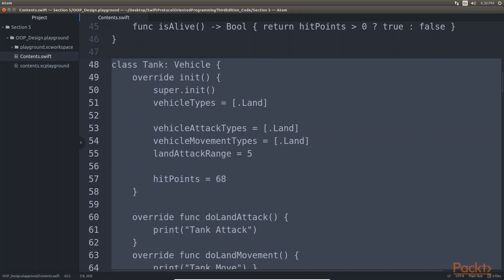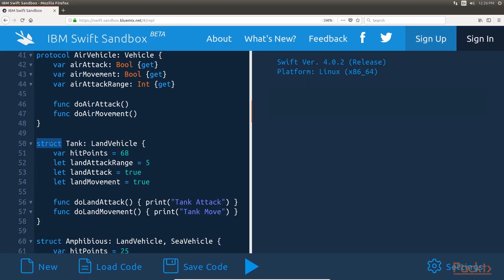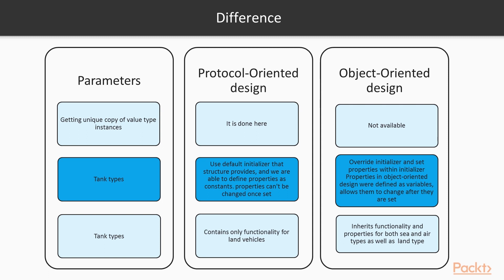The first thing we can see is that the tank type from our object-oriented design is a class, which is a reference type, while the tank type designed in a protocol-oriented way is a structure, which is a value type. Protocol-oriented design does not require value types, but it does say they are preferred. One of the main reasons to choose value types over reference types is safety — if we always get a unique copy of the value type instance, no other parts of our code can change that instance.